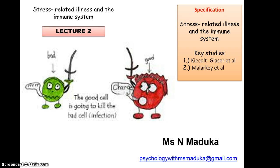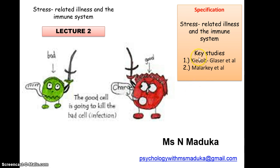What the specification requires us to know generically is just a bit about the immune system — and I say a bit because, as I said in my previous recordings, we're not biologists. I'm basically teaching all students how easy it is to get an A in AS Psychology. And there are only two key studies I'm going to be working with.